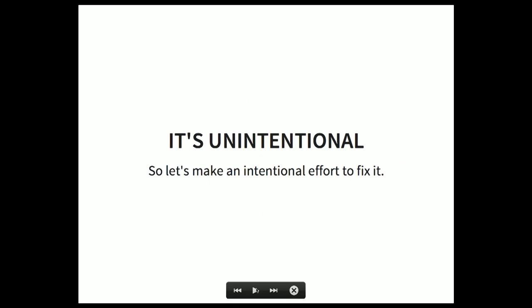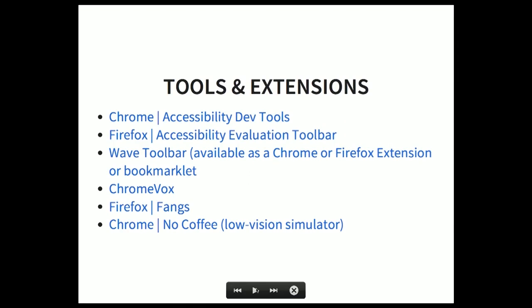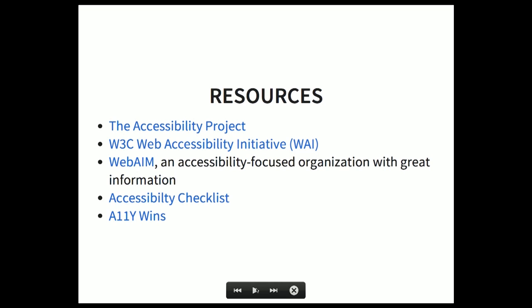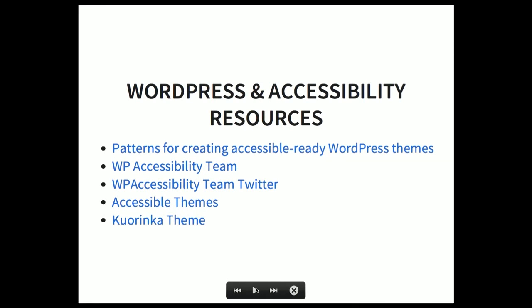Hopefully this talk — and the three other accessibility talks at WordCamp, which is thinking about accessibility by providing transcripts and similar resources — will help. We need to be leaders in our community and make sure we're building accessible sites. If you work on a team, let others know if they're doing something potentially harmful to users. I'll tweet out a link to my slides afterwards. There are tools and extensions to easily audit your sites for accessibility, online resources with great tutorials, and WordPress-specific resources including a WordPress accessibility team on Twitter, an accessible theme tag, and patterns for creating accessible-ready WordPress themes. Thank you very much.